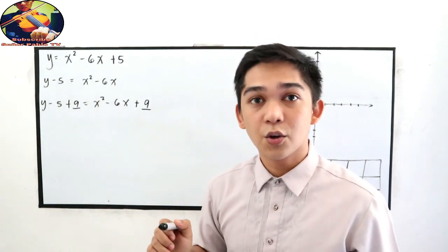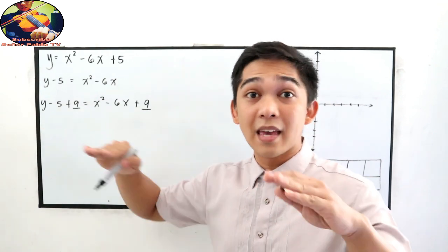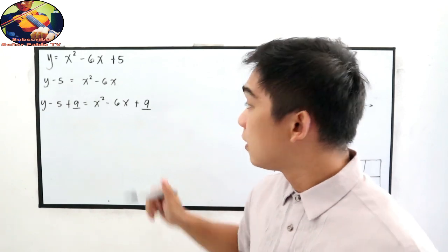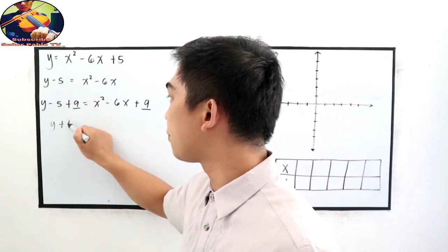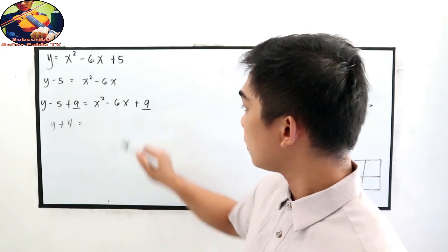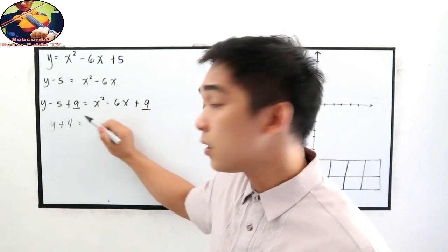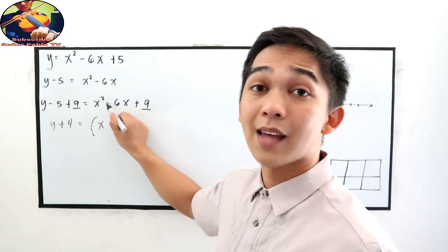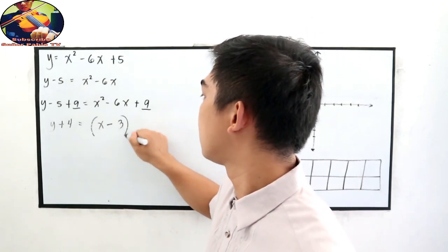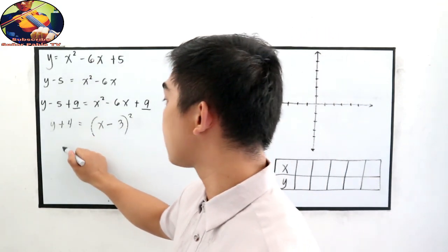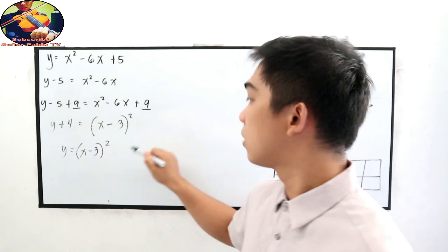Take note: if you add a number on the right side, you should add that same number on the left side to keep the equation balanced. Now simplify: y minus 5 plus 9 gives positive 4, so the left side is y plus 4. The right side is now a perfect square trinomial, which we can write as the square of a binomial: (x minus 3) squared.